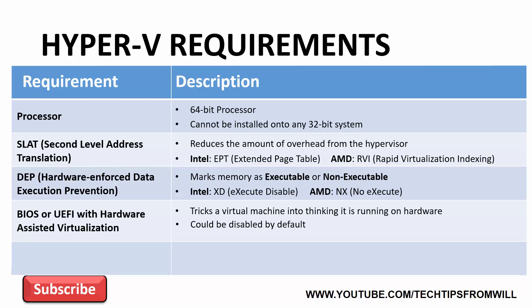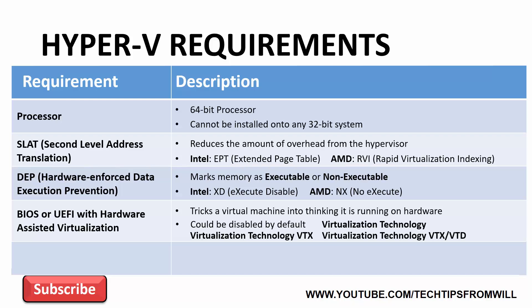It's worth noting that Hardware-Assisted Virtualization is disabled for some computers by default. If this is the case with your system, you're required to go into the BIOS or UEFI firmware for your server and enable the feature manually. Some of the more common listings for this option are: Virtualization Technology, Virtualization Technology VTX, Virtualization Technology VTX-VTD, and AMD V. You could find the option listed differently, but these are among the most common listings.